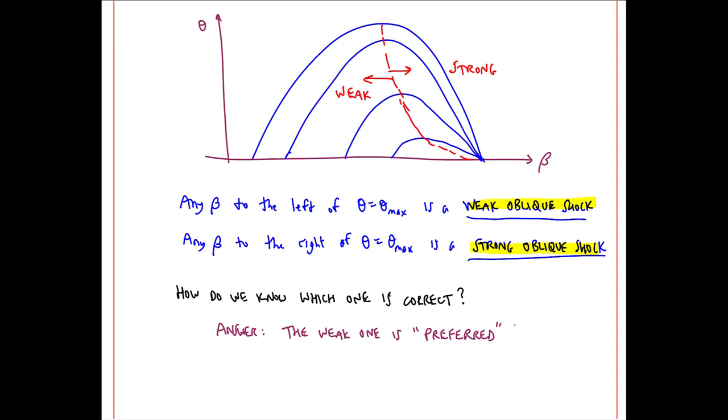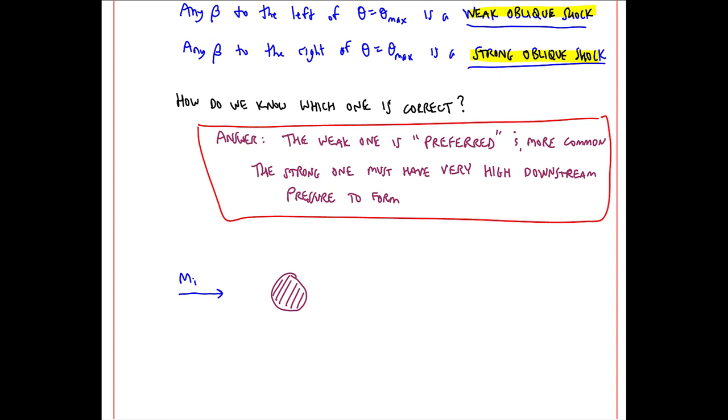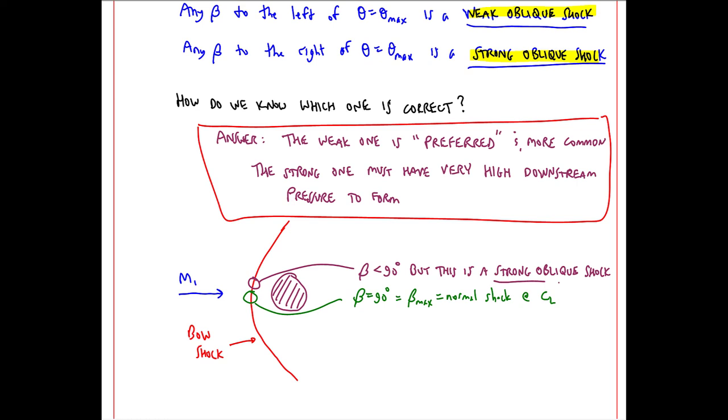So how do we know which one is correct? The answer is a little vague. The weak one is preferred and more common. The strong one must have very high downstream pressure to form. This answer is rather vague and not very satisfying. So we don't really know the answer unless we analyze the entire flow. Consider, for example, flow approaching some solid body at supersonic speeds. We get a bow shock. This shock is normal right at the center line. So beta is 90 degrees at the center line. Some small distance away from the center line, beta is less than 90 degrees, but this is a strong oblique shock. And at this point, beta may become small enough to be a weak oblique shock. I'll discuss the details of a bow shock later in the semester.